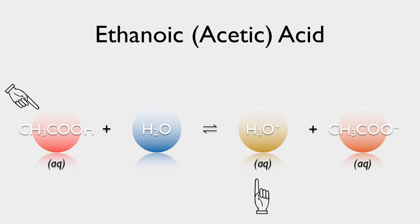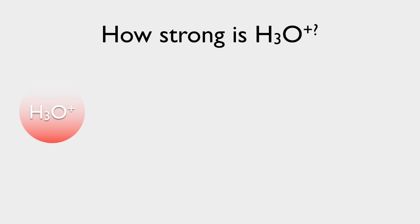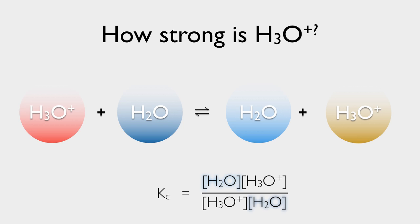It does dissociate a little bit, and we will find some ethanoate ion in solution. So what is the acid strength of hydronium? Well, if we dissociate it in water, funnily enough, the products are the same as the reactants, which gives us a funny-looking equilibrium expression.